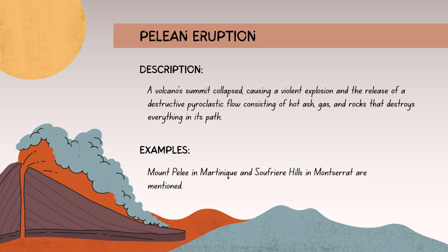The Pelean eruption is named after Mount Pelée, which experienced a devastating eruption in 1902. Pelean eruptions are characterized by the explosive eruption of highly viscous magma, often resulting in the collapse of the volcanic dome and producing pyroclastic flows — fast-moving, extremely hot mixtures of volcanic gases, ash, and debris. The 1902 eruption of Mount Pelée is a notable example, leading to the destruction of the town of Saint-Pierre and causing significant loss of life.